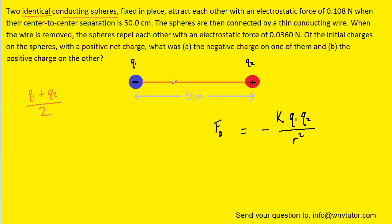So after we connect them with a wire, we know that the charge on this sphere has this value and the charge on this sphere also has that same value. So we're going to develop a second force equation. We'll call it f sub b.